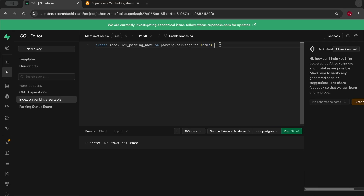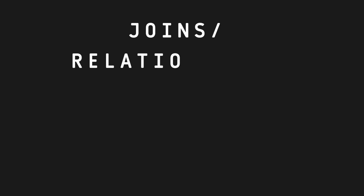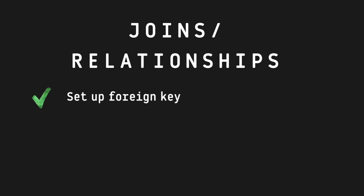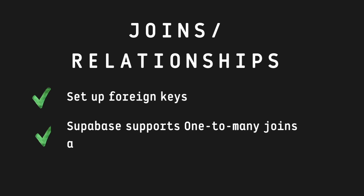We'll get to explore more when we head over to the app level and perform a search functionality or create a query that executes a search. Just a brief note on joins or relationships, which we've mentioned many times when creating our tables. Since we set up our foreign keys while creating our tables, this part is kind of done — the data API will seamlessly detect the relationships between tables based on those foreign keys. Supabase supports both one-to-many joins and many-to-many joins.